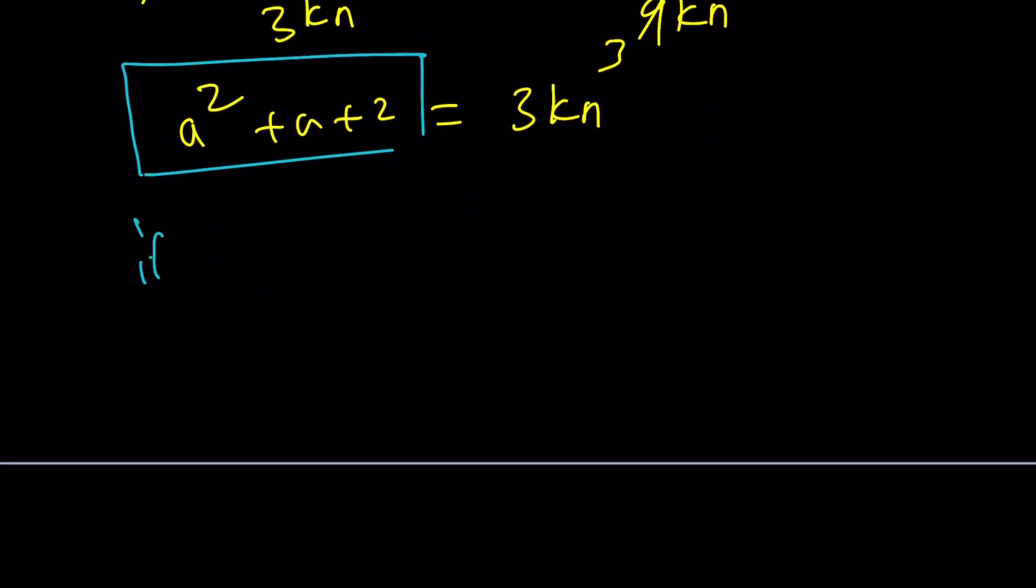Because if a ≡ 0 (mod 3) or a ≡ 2 (mod 3), then a² + a + 2—take a look at it. If a ≡ 0 (mod 3), these are going to be 0 and you're going to end up with 2. If a ≡ 2 (mod 3), this is going to be a(a + 1), which is a multiple of 3 again.